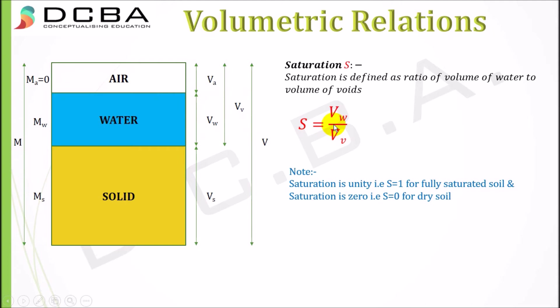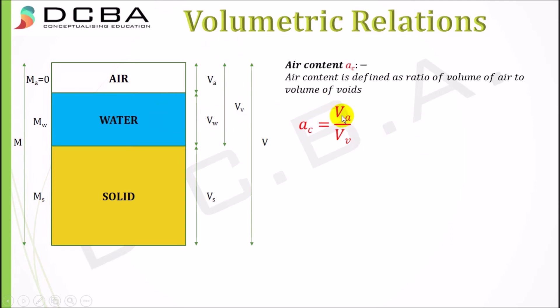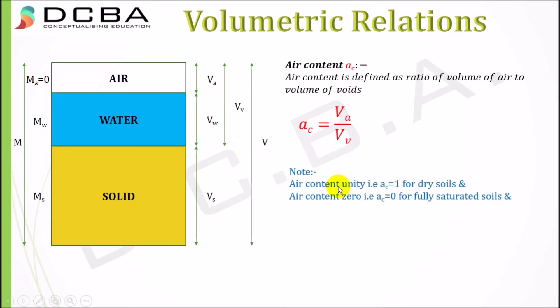Air content is defined as the ratio of volume of air to the volume of voids: Va/Vv. This is different from the percentage of air voids, which used total volume in the denominator. Air content shows how much of the total void volume is occupied by air. Air content is 1 for dry soils, since all voids are filled with air, and air content is 0 for fully saturated soils, since air is completely absent.